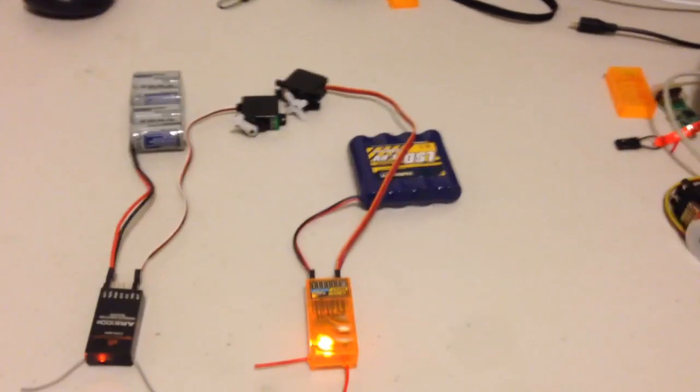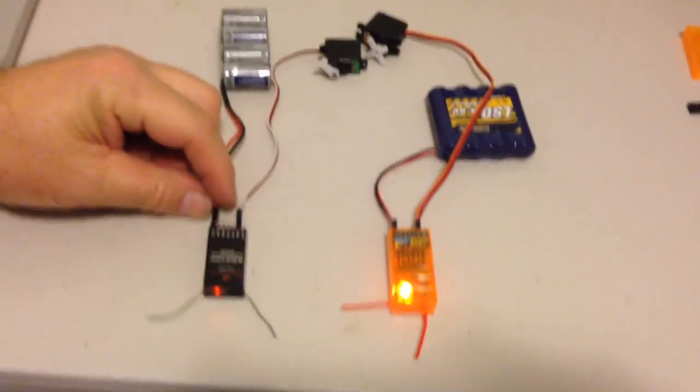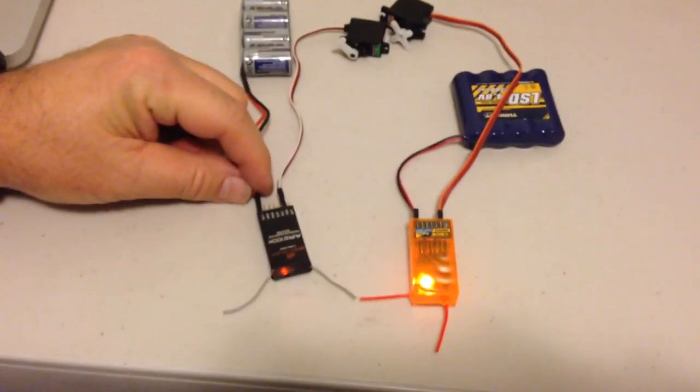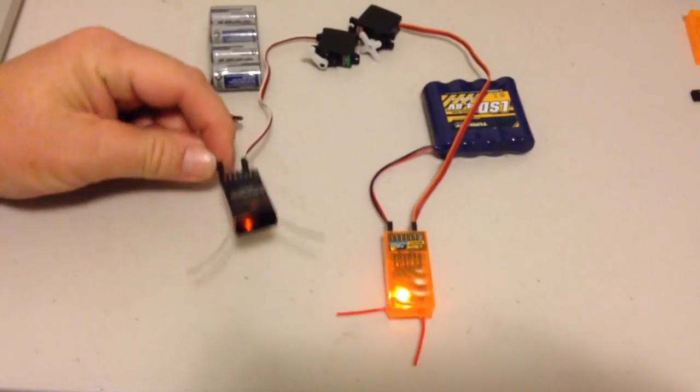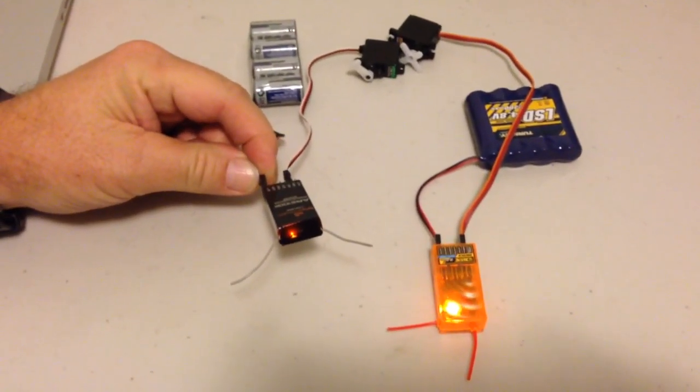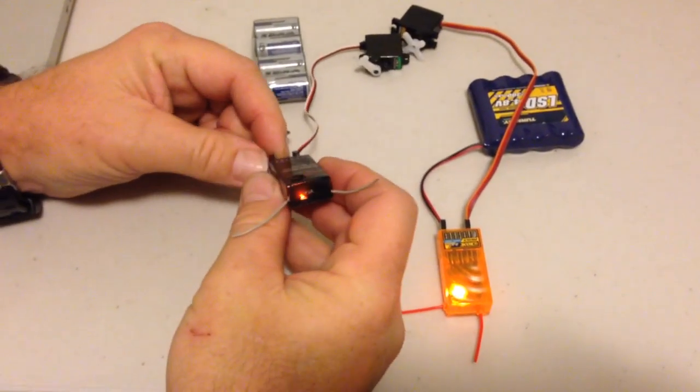What I'll do now is just show you the brownout recovery. Now because I've been turning the transmitter on and off several times, the first time I repower this receiver, it won't show you that there's been a brownout. You'll see a steady light. So removing the power and reconnecting.